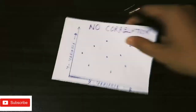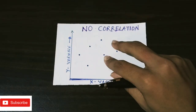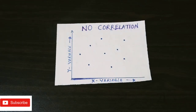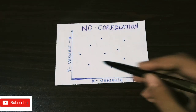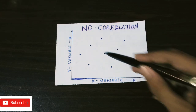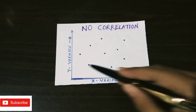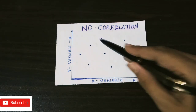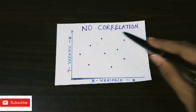Sometimes there is no relation between X and Y variables — that is, no correlation exists. In this case the graph will look scattered, and we are unable to draw any straight line connecting all these points together.